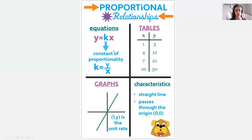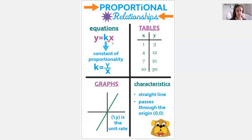We can see this relationship either represented as an equation, as a table of values, or as a graph. First, let's talk about what it looks like when it's represented as an equation. If it's an equation, our equation would be in this format: Y equals KX.